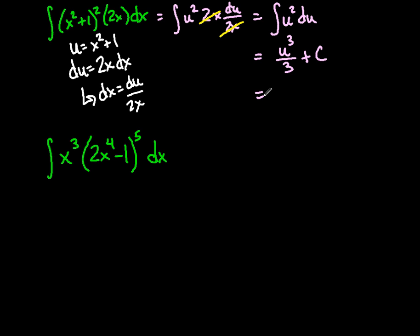So, this will be u cubed over 3 plus c. And, again, I don't want in terms of u, so I'm going to plug back in what u was. So, that's x squared plus 1 to the third power over 3 and plus c.